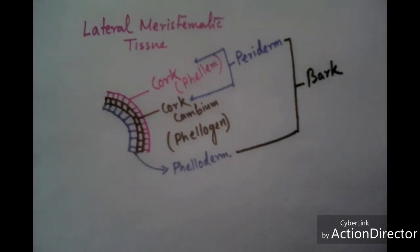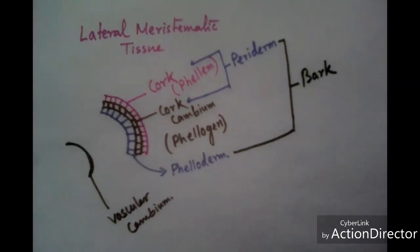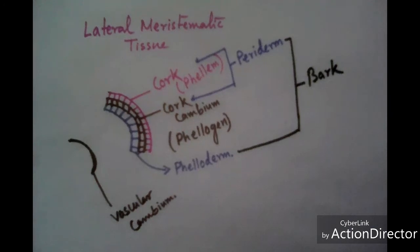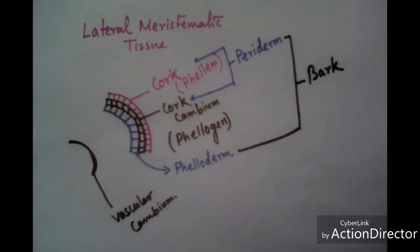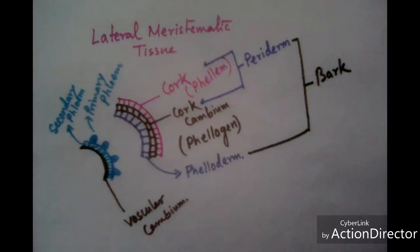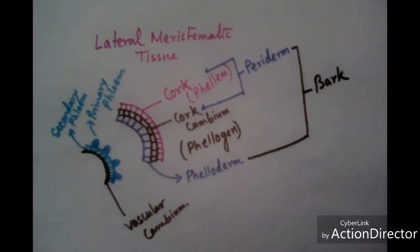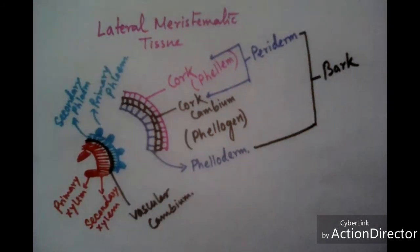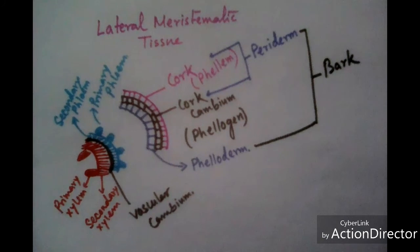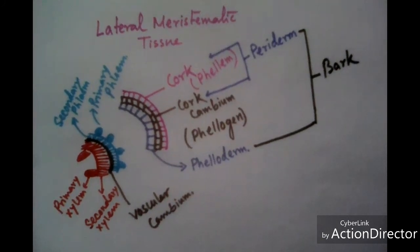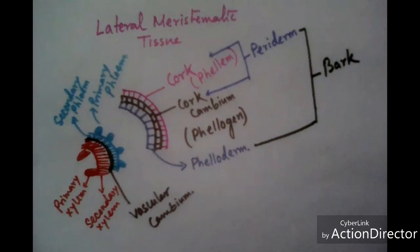Lateral meristematic tissue is also present in vascular cambium, which helps to increase the size of the vascular bundle. At the peripheral side of vascular cambium, phloem is present, and at the inner side of vascular cambium, xylem is present. So lateral meristematic tissue divides in one plane and increases the vascular bundle size and also the periderm size.